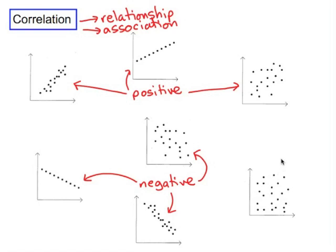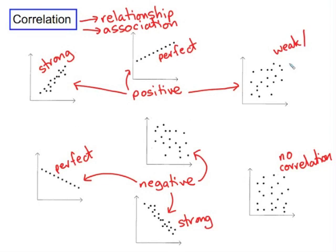Or there might be no correlation. Next we can describe the correlation as perfect or strong and weak or moderate if there's a general positive or a general negative trend.